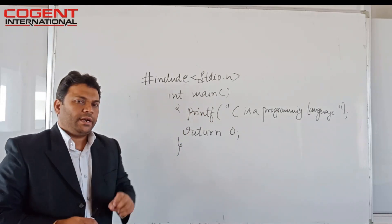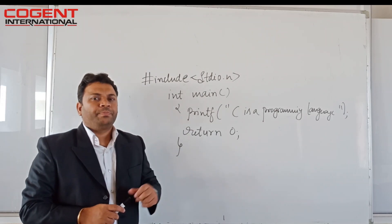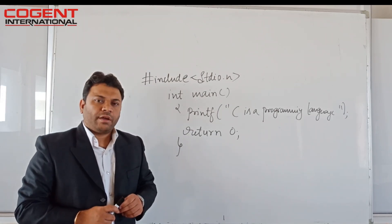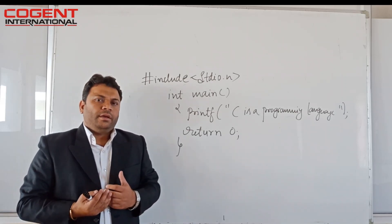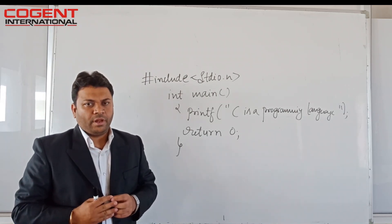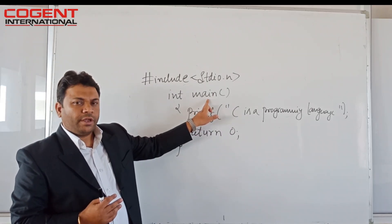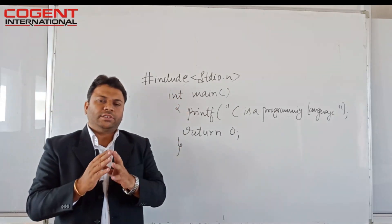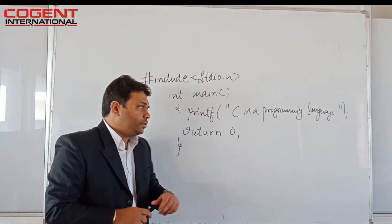Let us understand the difference between void main, int main, and float main. In C programming, every function must return a value — main is a function, so it must return a value. If you use void instead of int, that means this function does not return any value.